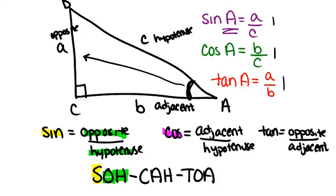And then we have cosine, C, is adjacent over hypotenuse, so AH. And then tan T is opposite over adjacent, OA.